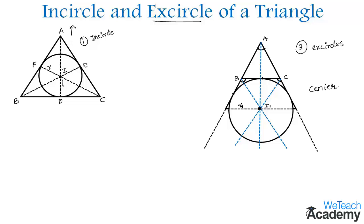ID, IE, and IF are the radii of the circle. Now coming to the formulas, first let us consider a triangle ABC.